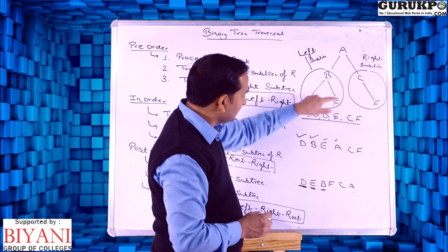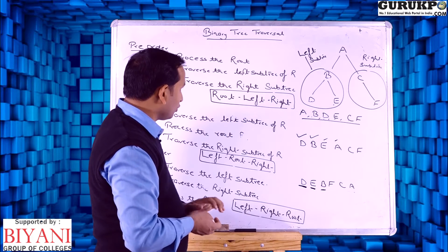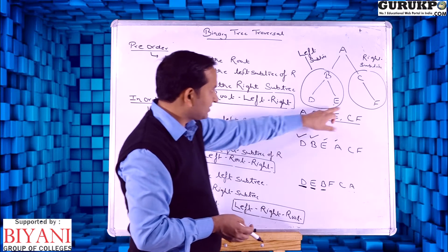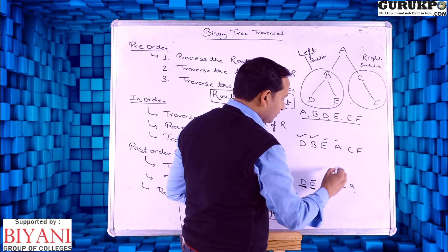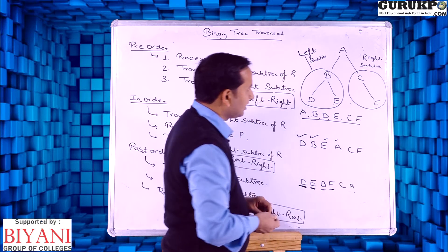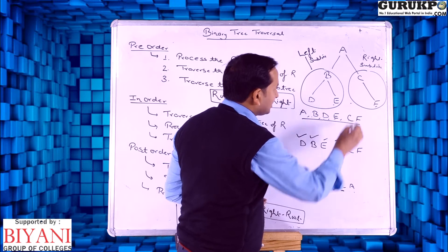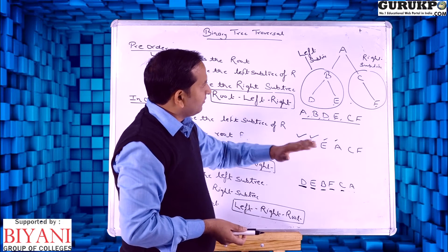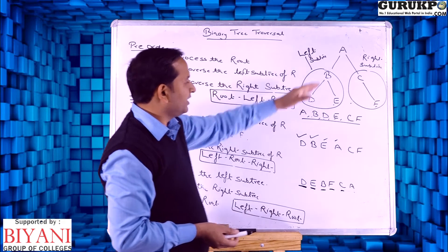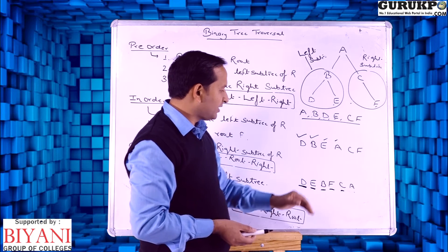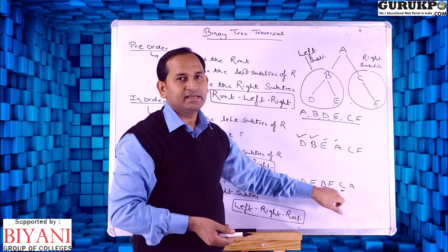After the left subtree, the ordering moves to the right subtree. Here the right is C. C is the root node of F. We traverse the left subtree of C — there is no left node of C — then we traverse the right subtree, which is F. The root of that subtree is C. Finally, both left and right subtrees are complete, and the last node is the root A. So ultimately the post-order traversal is D, E, B, F, C, A.